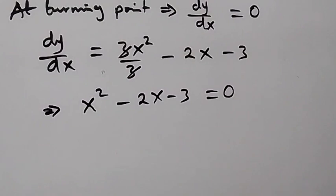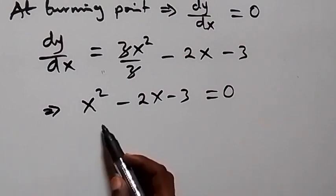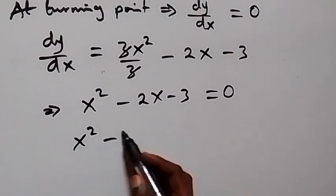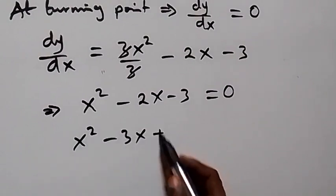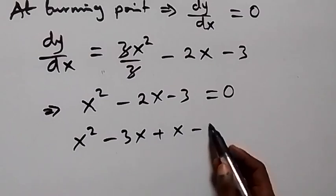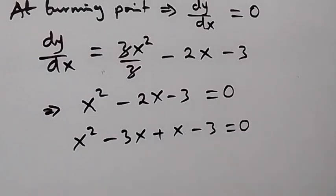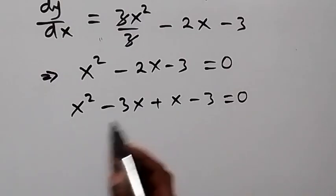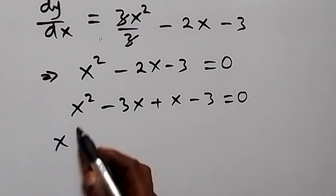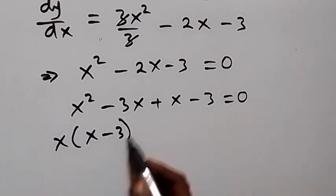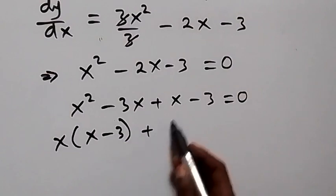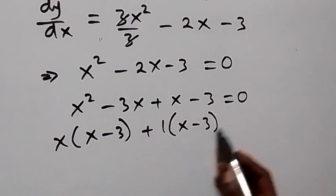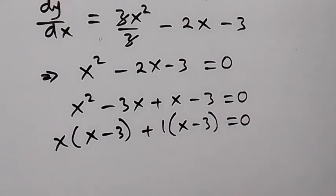We solve the quadratic by factorizing. We rewrite x² minus 2x minus 3 as x² minus 3x plus x minus 3, equals zero. Factoring the first two terms gives x(x minus 3), and factoring the last two terms gives plus 1(x minus 3), equals zero.